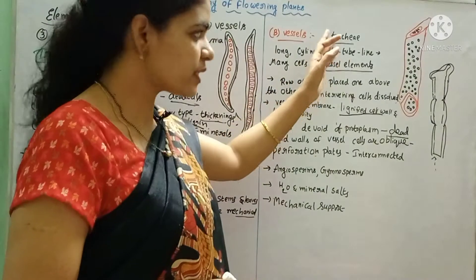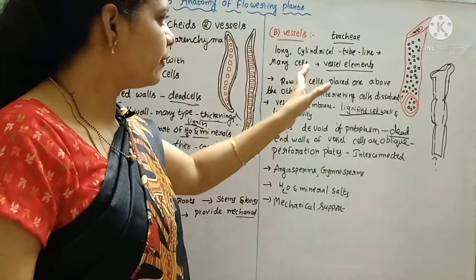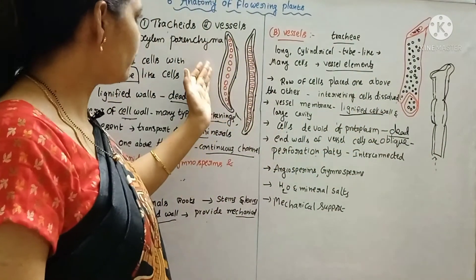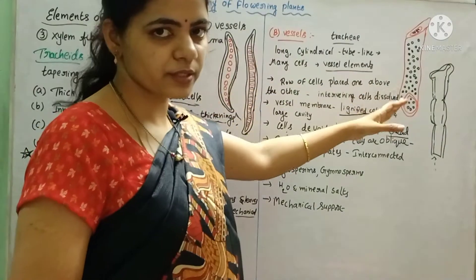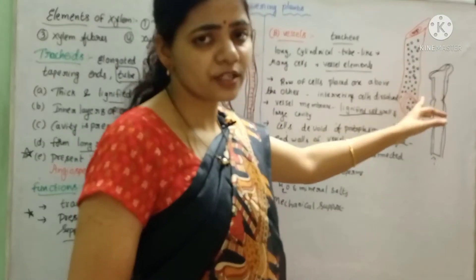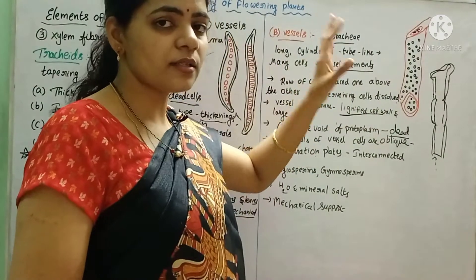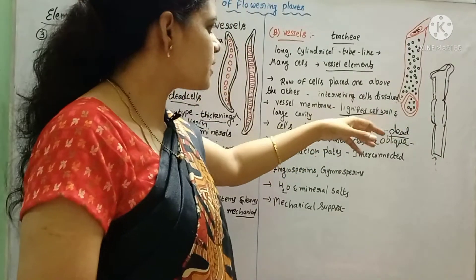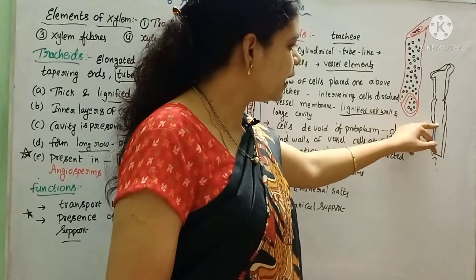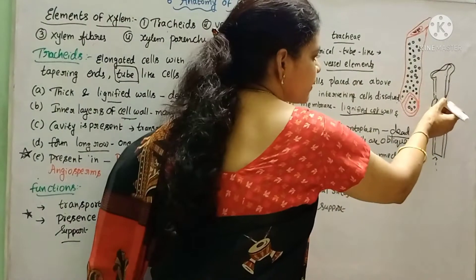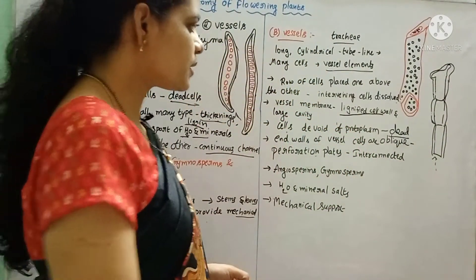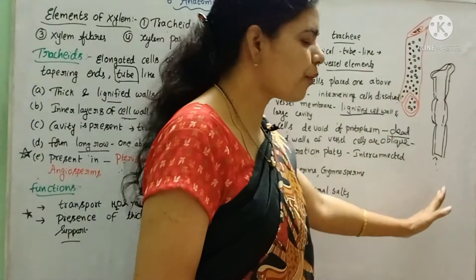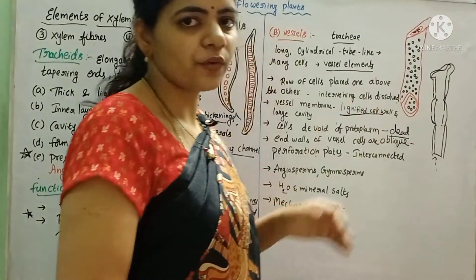Next, there are vessels. There are also vessels in the trunk. These are long cylindrical tube-like structures. There are many cells arranged in a row. There are intervening junctions, and the intervening cell walls dissolve so that water and minerals can be transported.